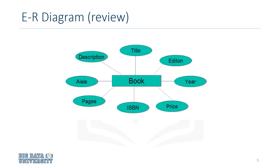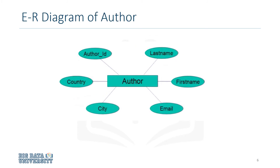Attributes are connected to exactly one entity. For the entity author, the ER diagram would look like this. The entity author has attributes last name, first name, email, city, country, and author ID.